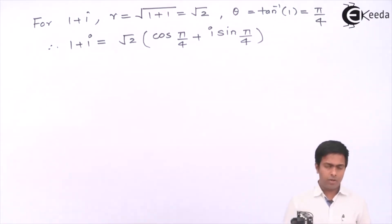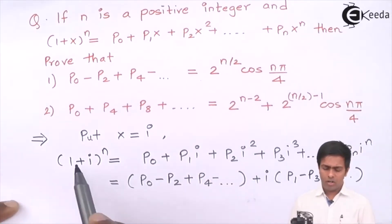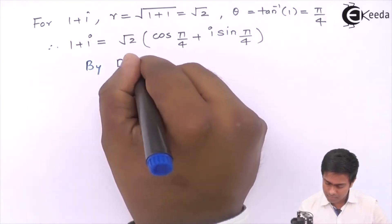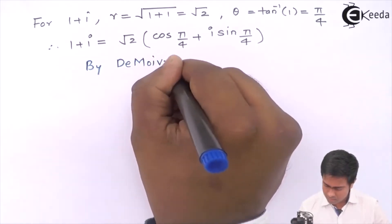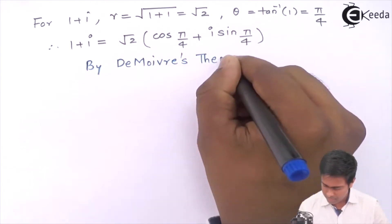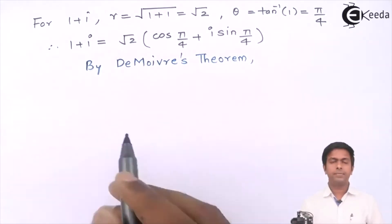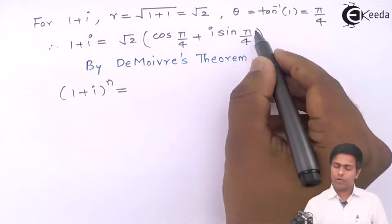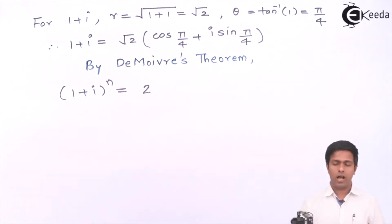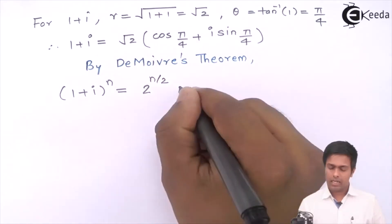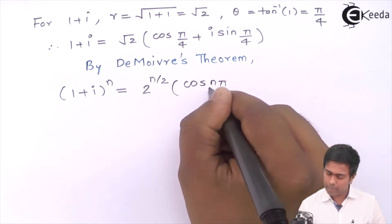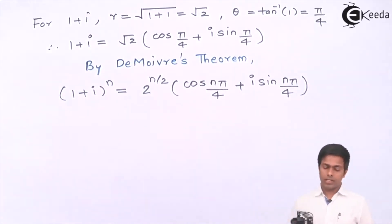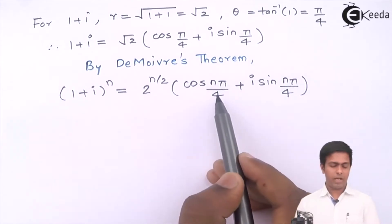Now we find the nth power of this expression. By De Moivre's theorem: (1 + i)^n = (√2)^n · (cos(nπ/4) + i·sin(nπ/4)) = 2^(n/2) · (cos(nπ/4) + i·sin(nπ/4)). So the real part is 2^(n/2) · cos(nπ/4).